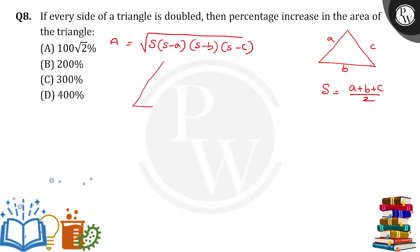There is another triangle, the same triangle whose sides are doubled, which means it will become 2A, 2B and 2C.